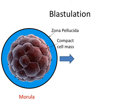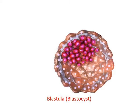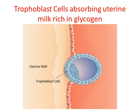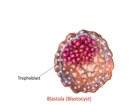The outer layer of cells seen in the morula now form the layer called trophoblast. Cells from the trophoblast begin to absorb the glycogen-rich uterine milk. The blastocyst doubles in size from 0.15 mm to 0.3 mm, with more fluid entering inside the blastocyst as cavities form. The outer cells become flat and are now called trophoblast cells, since they help in absorbing nutrition for the developing embryo.